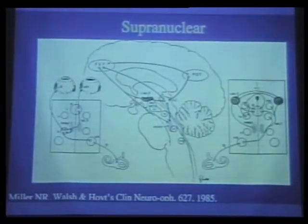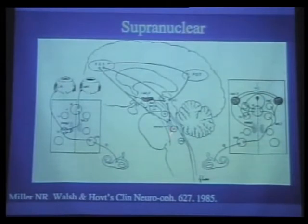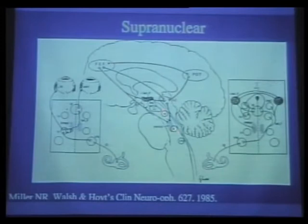Here are the pathways. The key point is that the ocular motor nuclei—cranial nerves three, four, and six—live in the brainstem, specifically the midbrain and pons. Anything above these nuclei is supranuclear, and anything between the nuclei is internuclear.